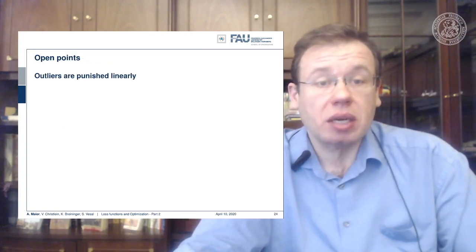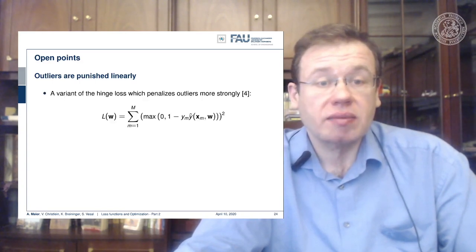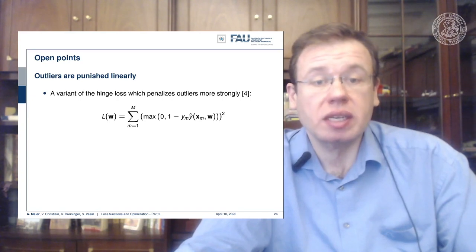Outliers are punished linearly. So there's variants of the hinge loss which penalizes the outliers more strongly, and you can do that, for example, by introducing squares. So also a very common choice. See reference 4.